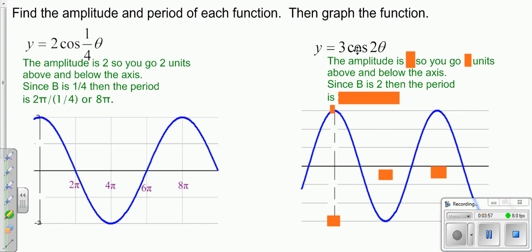Similarly over here for 3 cosine 2θ. Amplitude is the number in front, 3. Period is going to be 2π divided by 2, or π.